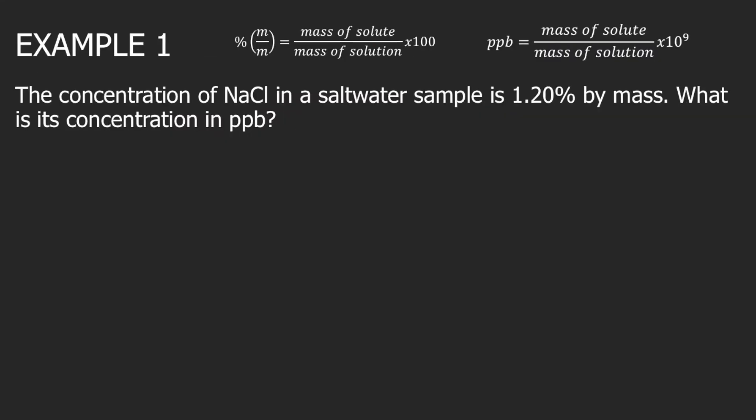Let's try answering Example 1. The concentration of sodium chloride in a saltwater sample is 1.20% percent by mass. What is its concentration in PPB? In this example, we are given percent by mass, which is 1.20%, and we will convert this to PPB.